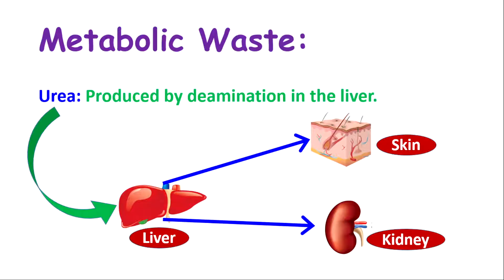Another metabolic waste is urea. Urea is produced by a process called deamination in the liver. Urea comes from excess amino acids — when the liver breaks down excess amino acids, we get urea. Amino acids come from protein, so too much protein will give you a lot of amino acids and then produce a lot of urea. When the liver converts the excess amino acids into urea, the urea is excreted either through the skin in the form of sweat or through the kidneys in the form of urine.